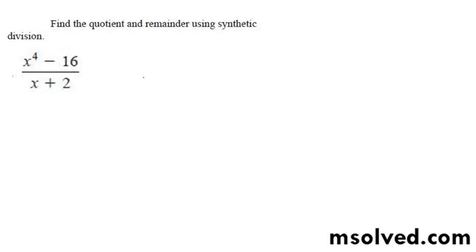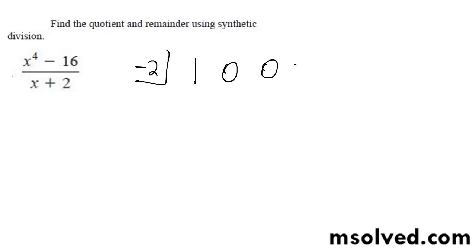So I'm going to use polynomial division for this, so I get negative 2, and then my coefficient for x to the first, I get x cubed, x squared, and then the x term, and then I have negative 16.